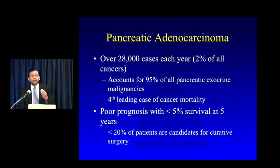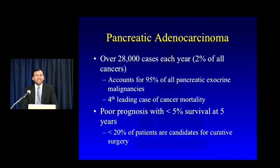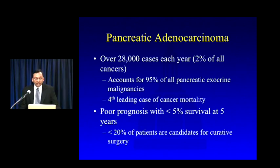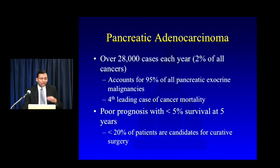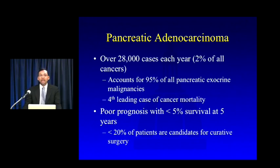Let's start with what I consider the most important pancreatic neoplasm: pancreatic adenocarcinoma. I work at probably the biggest pancreatic cancer referral center in the country and see dozens of these cases every week. Having a systematic algorithmic approach is critical. Pancreatic cancer is not that common overall — about 28,000 cases per year, roughly 2% of all cancers — but it accounts for 95% of all pancreatic exocrine malignancies and is the fourth leading cause of cancer mortality.